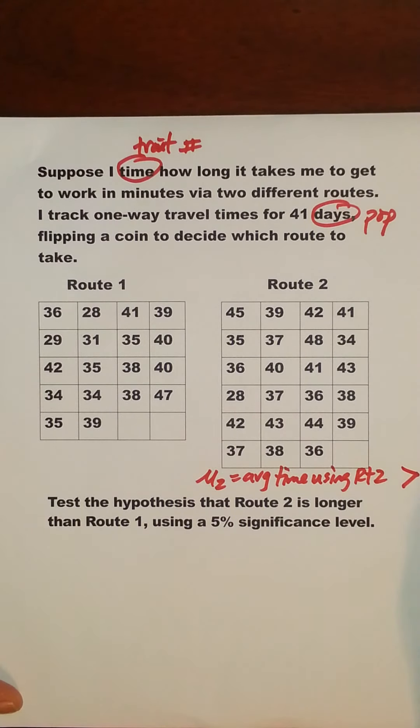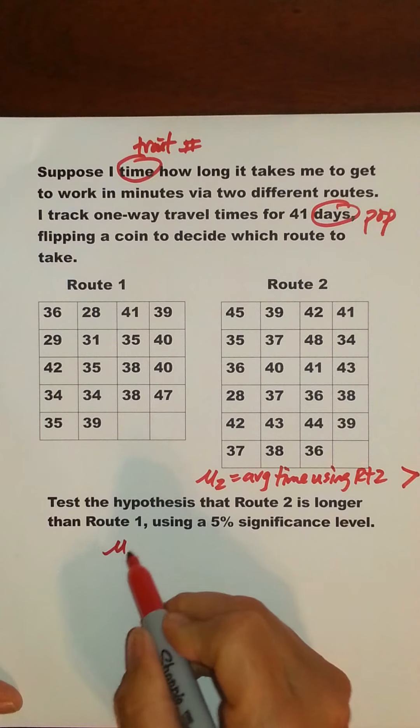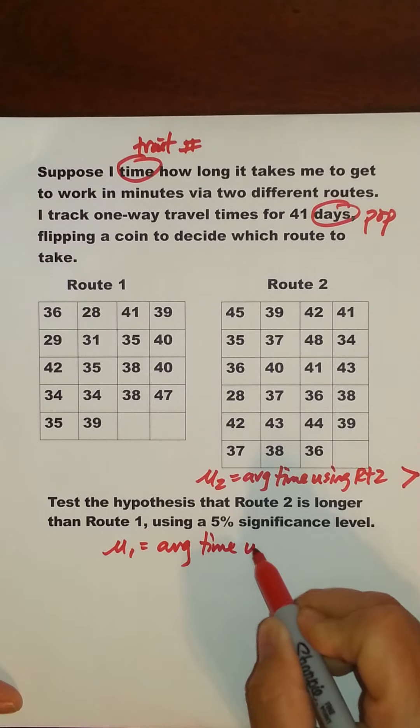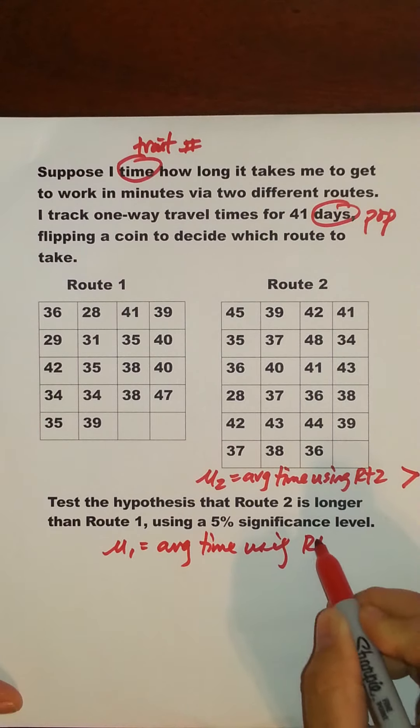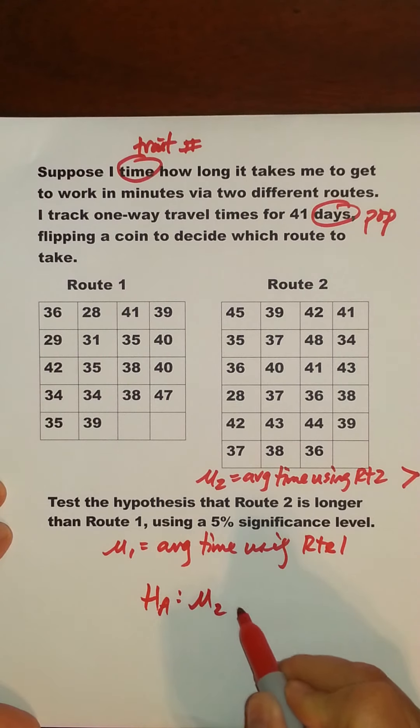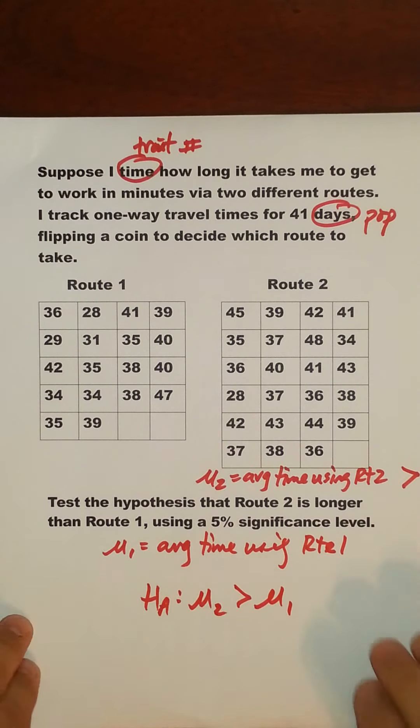So therefore it takes more time than Route 1, which would be Mu1, which is the average time using Route 1. So essentially what that means is your alternative will be set up Mu2 that's greater than Mu1, just translating directly from the sentence here that's given to us. Let's go ahead and set up our hypotheses.